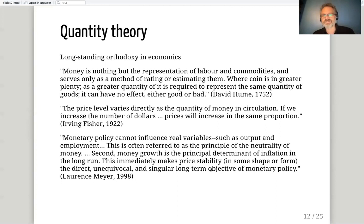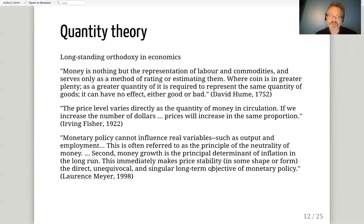Coming up to the relatively recent past, Lawrence Meyer, a member of the Federal Open Market Committee, wrote a book about his experiences there. When explaining the underlying economics of what the Fed is doing, one of the first things he tells people is: 'Monetary policy cannot influence real variables such as output and employment — this is often referred to as the principle of the neutrality of money. Money growth is the principal determinant of inflation in the long run,' making price stability the singular long-term objective of monetary policy.